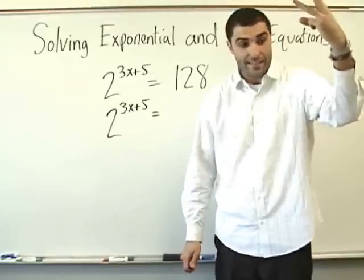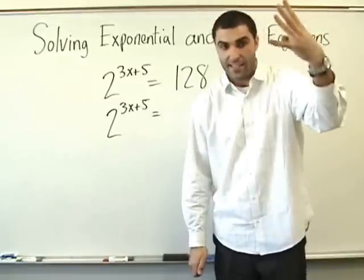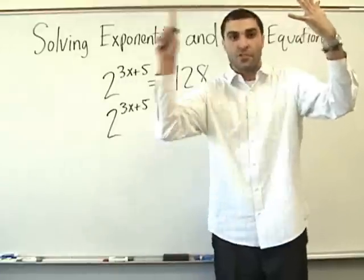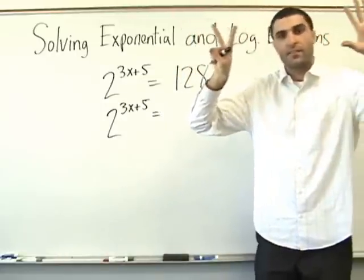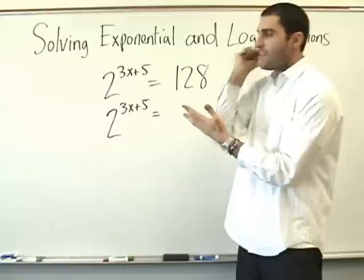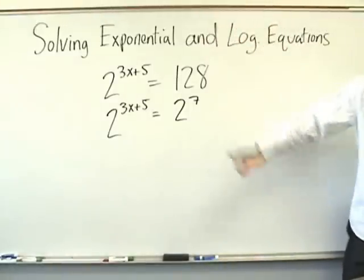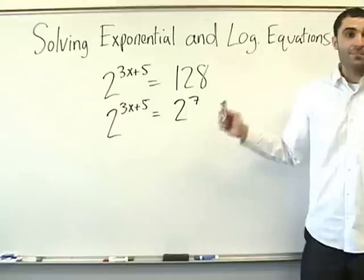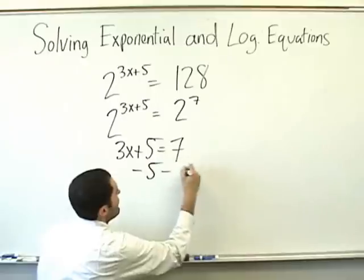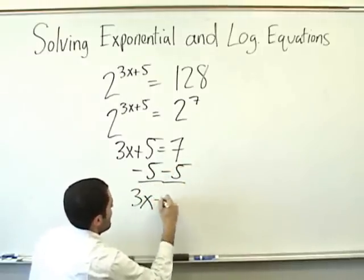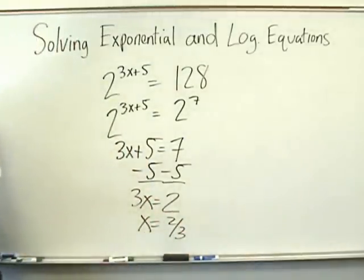2 to the 4 is 16, times 2 is 32, times 2 is 64, times 2 is 128. That's 7 twos. Don't be afraid of a little elbow grease. 2 to the 7. So 3x plus 5 equals 7. 3x equals 2. x equals 2 thirds.